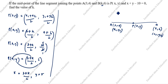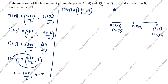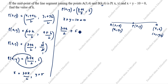Now, what is given in this question? x plus y minus 10 is equal to 0. We calculated P(x, y): x is (3 plus k) divided by 2, and y is 5. Substituting: (3 plus k) divided by 2, plus 5, minus 10 equals 0.